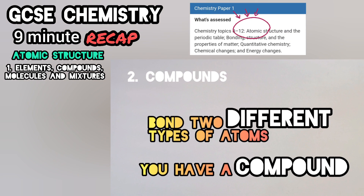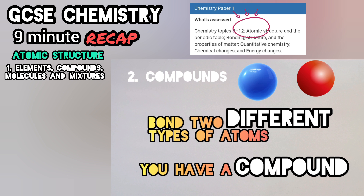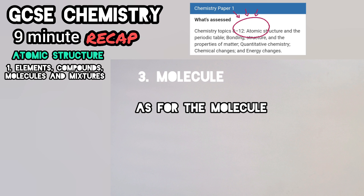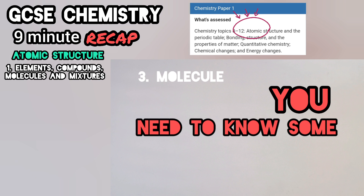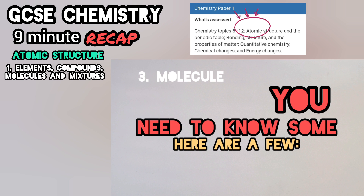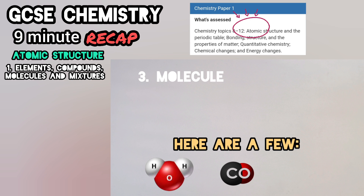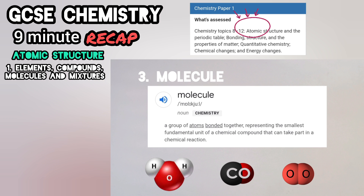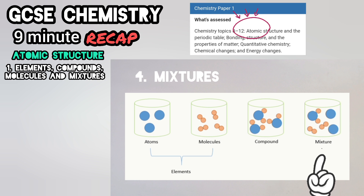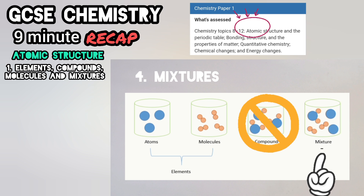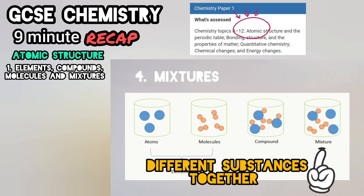On two different types of atoms you have a compound now — you'll find those atoms have to be different and be chemically combined. As for the molecule you need to know some, here are a few: H₂O, CO, and O₂. Now learning mixtures is easy, not like compounds this time — different substances together, not chemically combined.